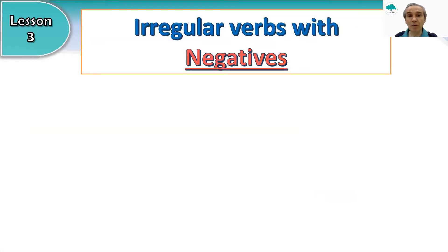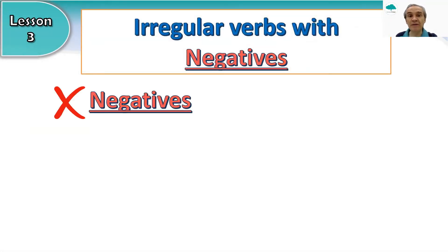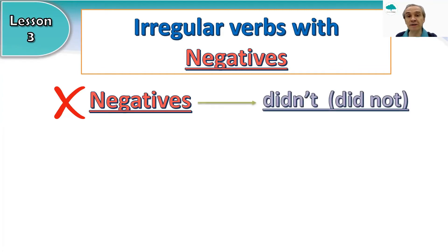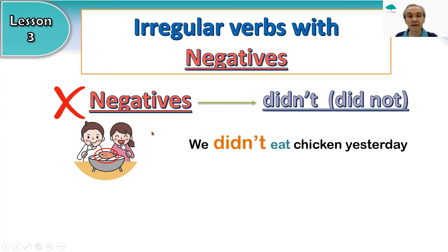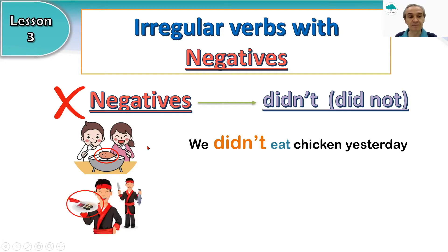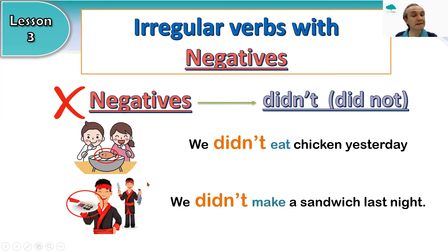Today we're looking at these verbs with the negatives. We use the word 'didn't', which is short for 'did not'. So we say: didn't / did not. Let's look at the picture. We didn't eat chicken yesterday. Look at this picture — we didn't make a sandwich last night.